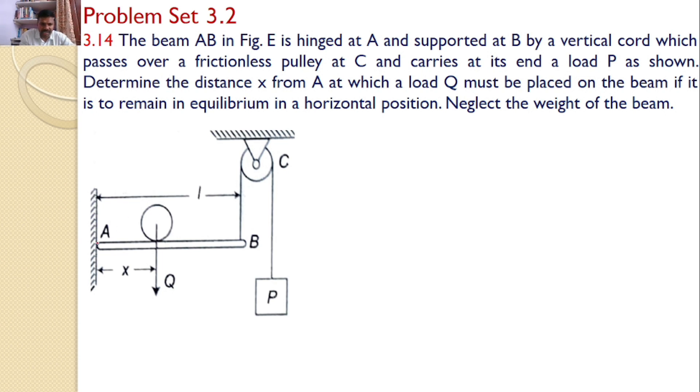That means there is a beam AB. One end is hinged and at the other end, a cord is passed over the frictionless pulley and a load P is attached here. Now, our interest is to find at what distance I need to place this Q so that the AB is under equilibrium.